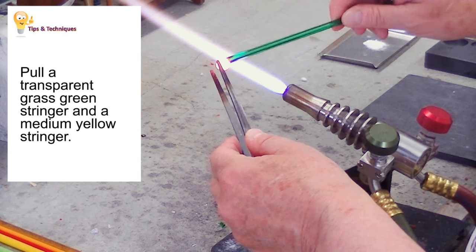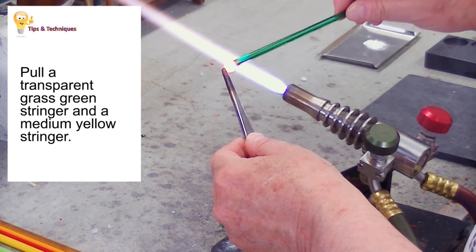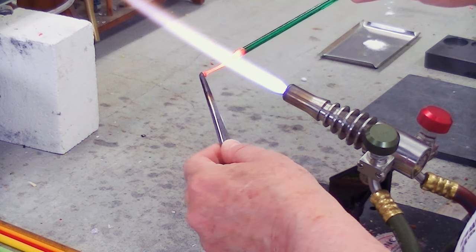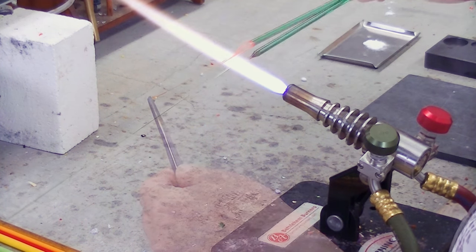Right now, we're pulling a transparent grass green stringer. You'll see that I'm pulling it with my tweezers on top of the flame.